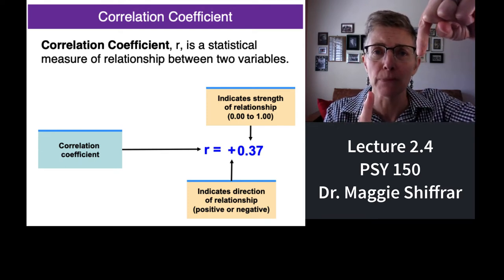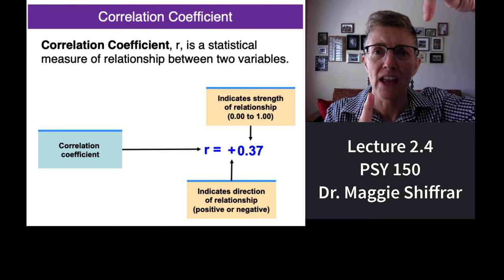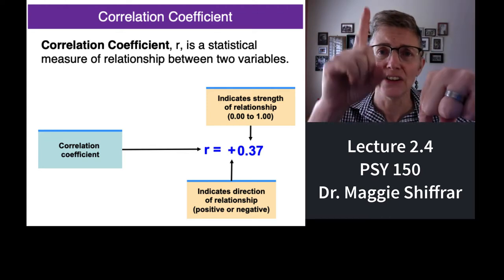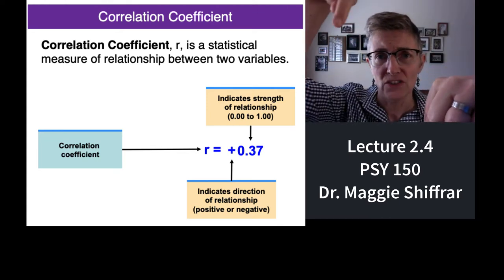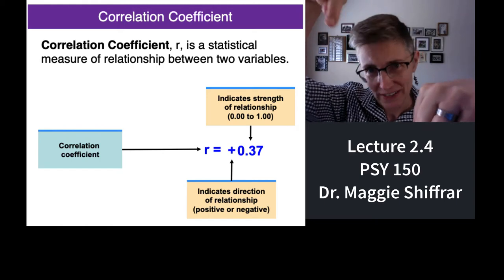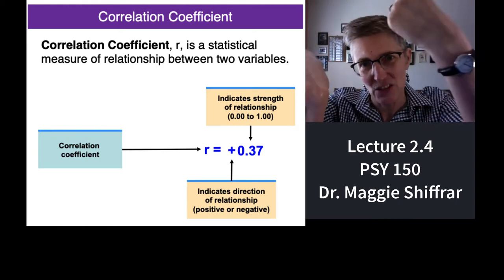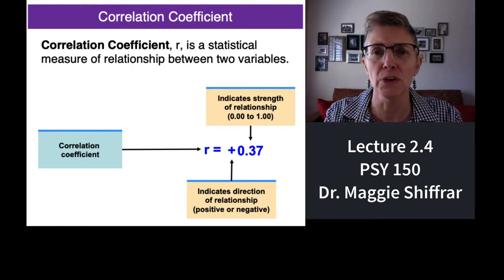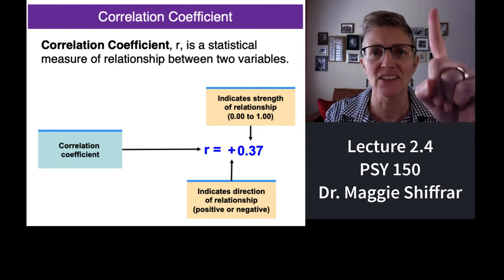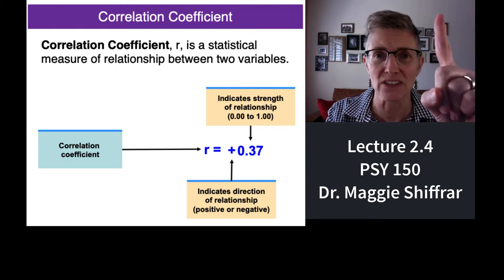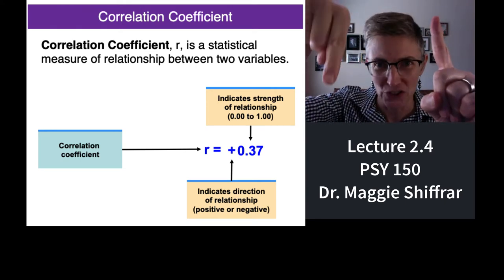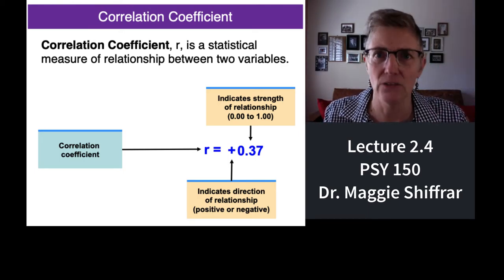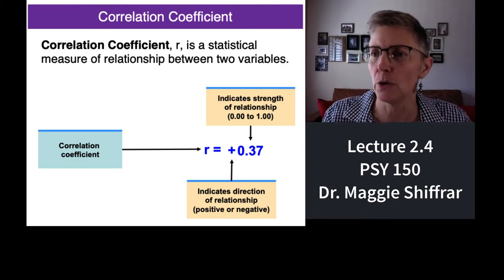If a correlation coefficient is negative, it means that the two variables move in opposite directions — as one decreases, the other increases. For example, right now in California, as the number of COVID cases increases, the number of people with jobs decreases. That would be a negative correlation coefficient.